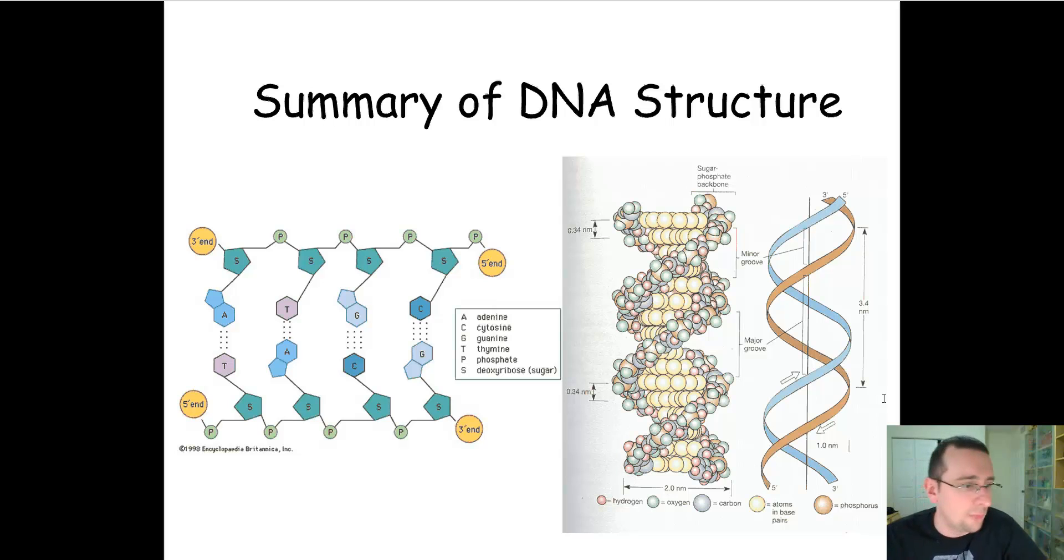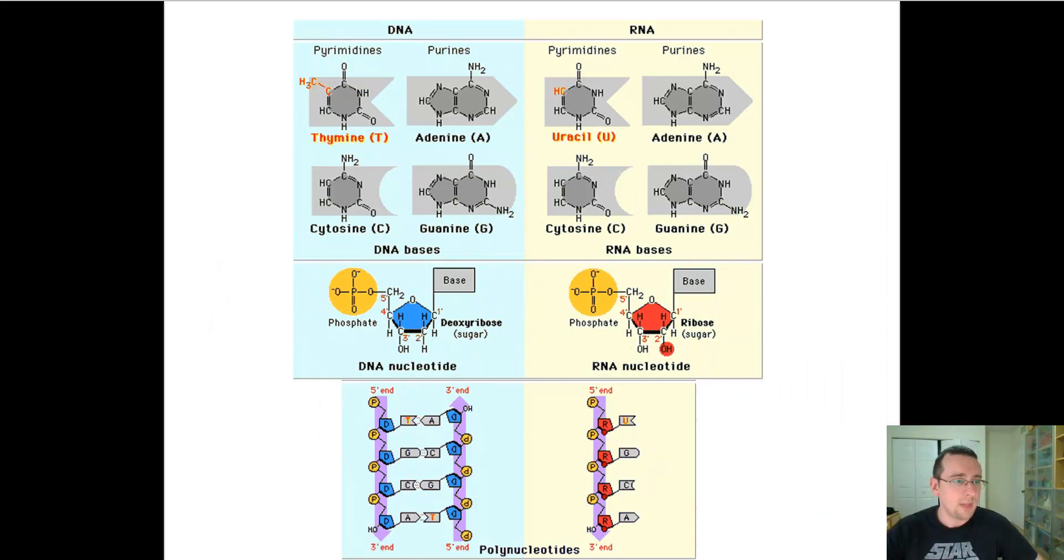Remember, the anti-parallel strands must happen in order for the bases to pair up successfully as well. Normally, the DNA is twisted to the right side. If it's twisted to the left side, it's called Z-DNA, and that can cause mutations due to the DNA copy process.